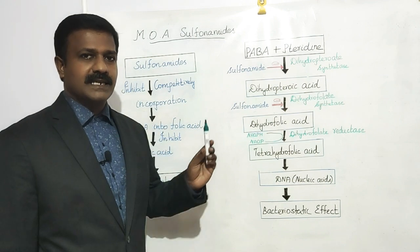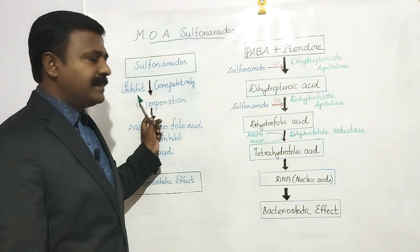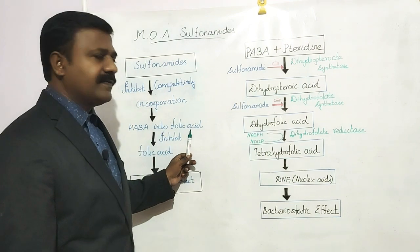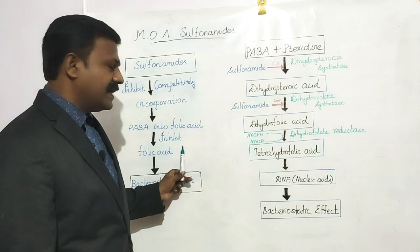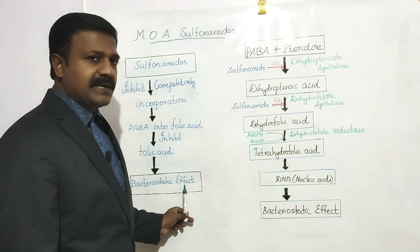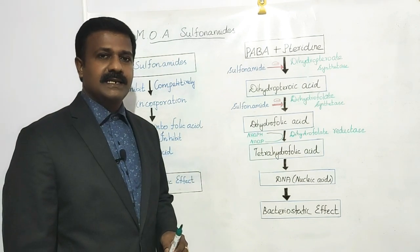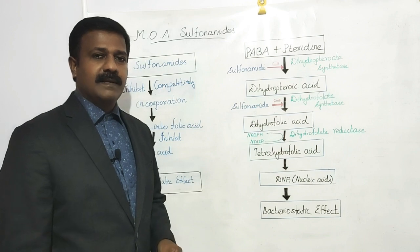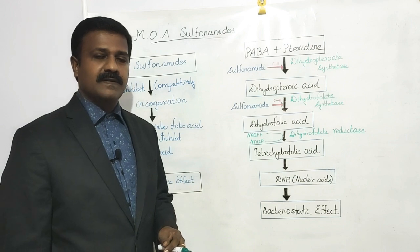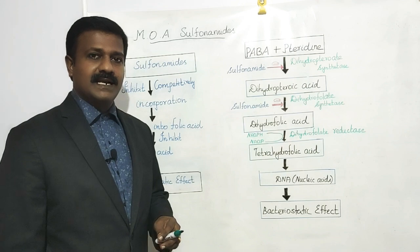Then what is the mechanism of action of sulfonamides? Sulfonamides competitively inhibit the incorporation or addition of PABA into folic acid. Thereby, it inhibits the synthesis of bacterial folic acid and produces the bacteriostatic effect. PABA means para-amino benzoic acid. It is an essential component of bacteria to synthesize folic acid, which is in turn essential to synthesize purines, thymidines, and DNA molecules.